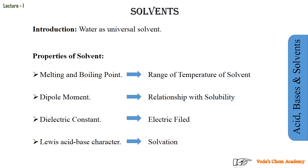Whenever we choose a solvent for a particular reaction, its dipole moment must be higher. The third property is the dielectric constant, which is related to the electric field. When we calculate the dielectric constant, we put the object in an electric field and it rotates to neutralize the field. The dielectric constant is related to the dipole moment — solvents with higher dipole moment also have higher dielectric constant, making them a good choice as solvents.